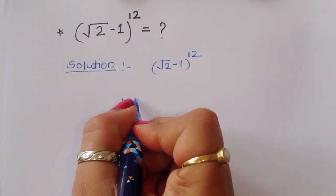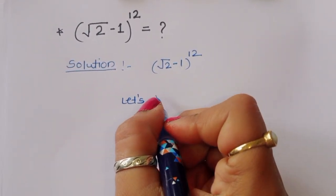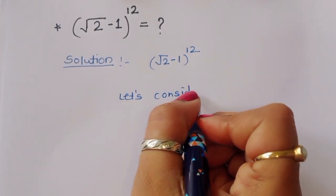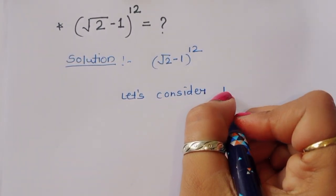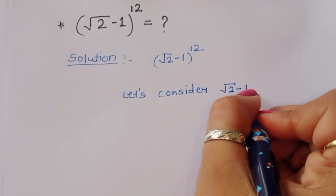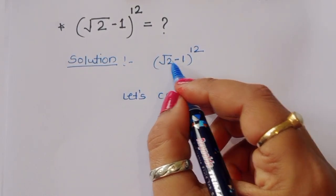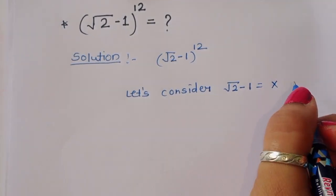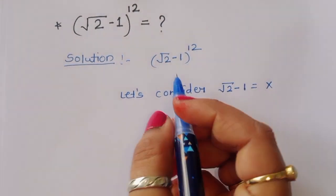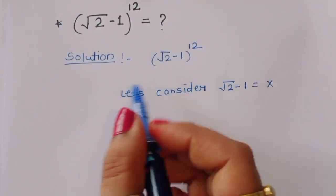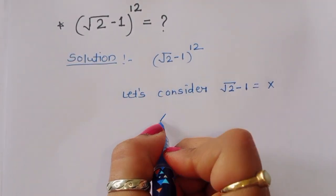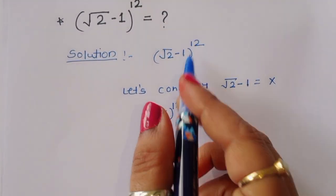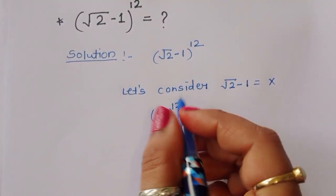Let's consider √2 - 1 equal to x. So the term (√2 - 1)^12 becomes x^12, and we have to find out the value of x^12.